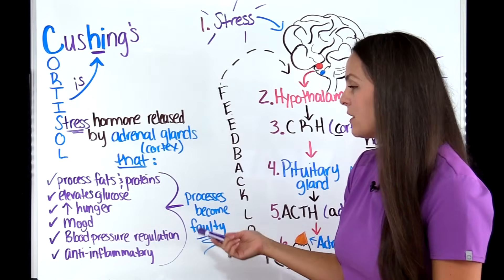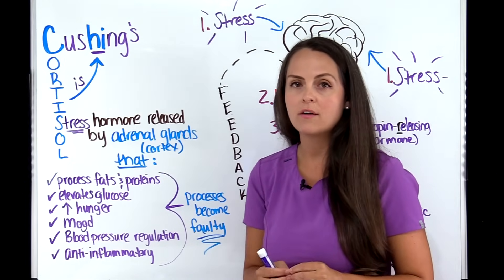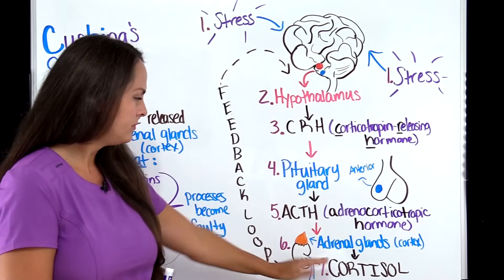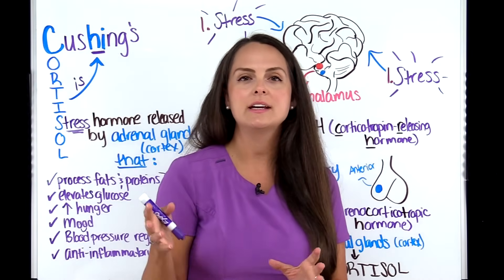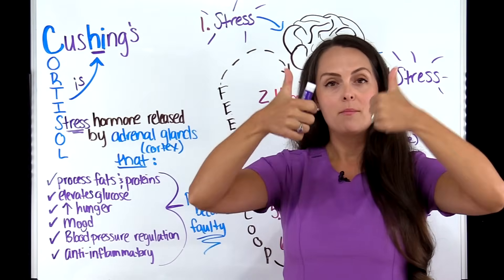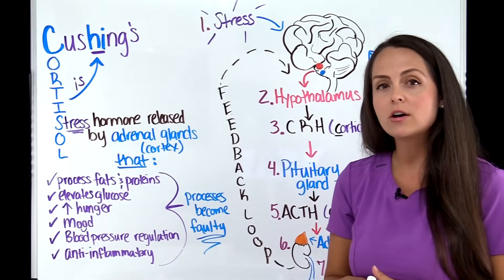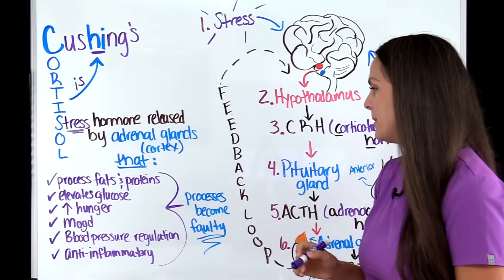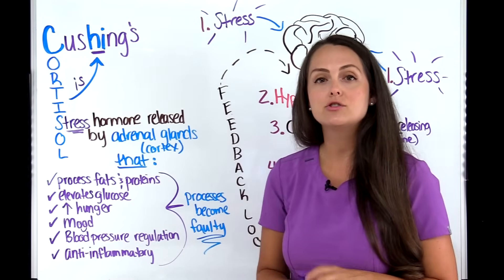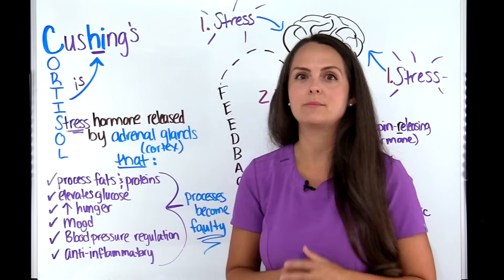Blood pressure can be high with hypertension because cortisol can mimic the role of aldosterone. Aldosterone causes the kidneys to retain sodium and water, increasing blood pressure. However, potassium is wasted, so patients can experience hypokalemia. Due to anti-inflammatory properties, Cushing's patients can have slow wound healing and are at risk for infections because the immune system is suppressed.